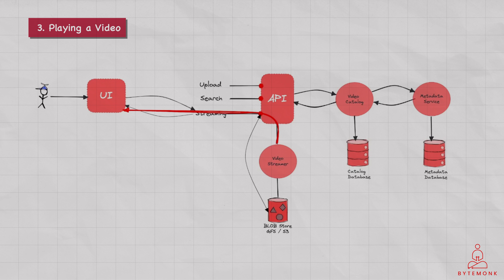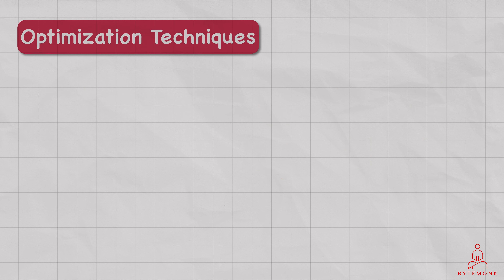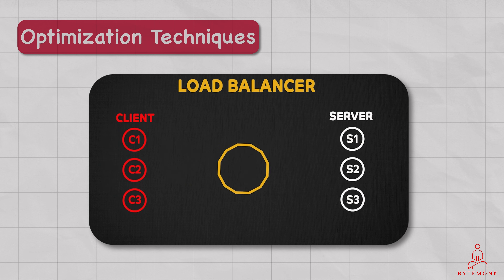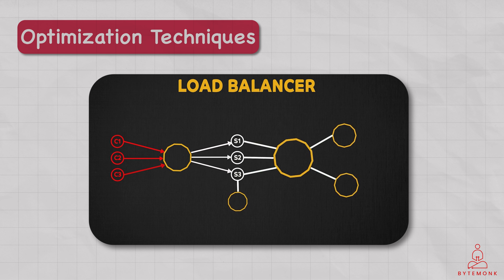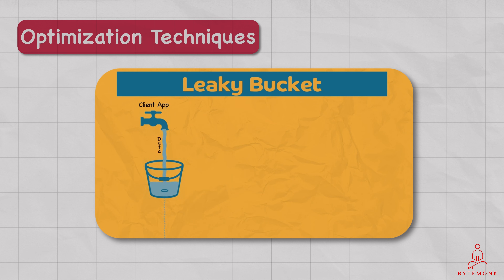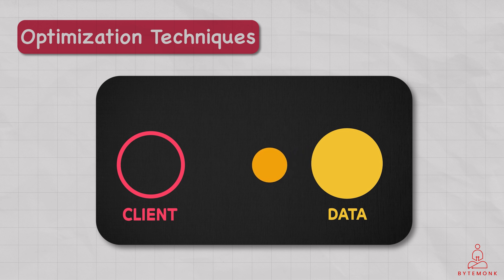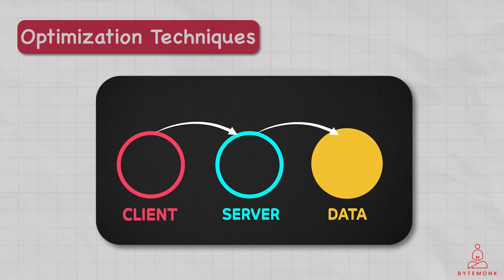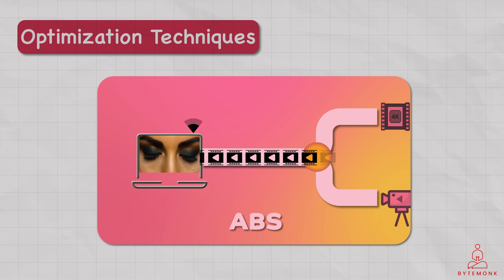Additionally, since we are in a system design interview, let's also talk about some optimization techniques. Load balancing can be used to distribute user requests across multiple backend servers to improve system scalability and reliability, using tools such as Nginx or Amazon ELB. Rate limiting can be used to prevent abuse and improve system performance by limiting the number of requests a user can make per unit of time. Caching can be used to improve performance by reducing the number of requests to the backend — for example, caching the results of frequently used search queries can significantly improve search performance. Compression can be used to reduce the size of video files and other data transmitted over the network, improving overall system performance and reducing network usage costs.